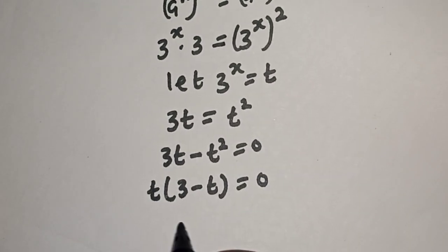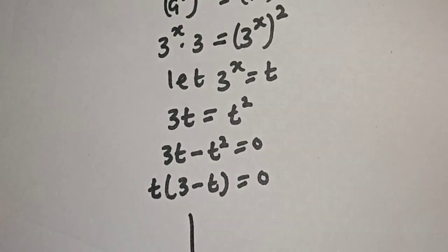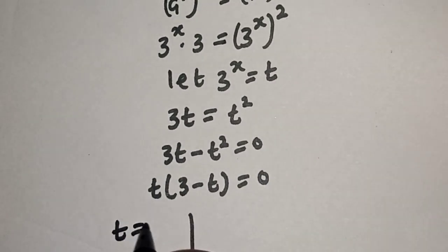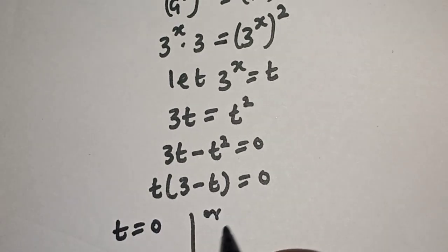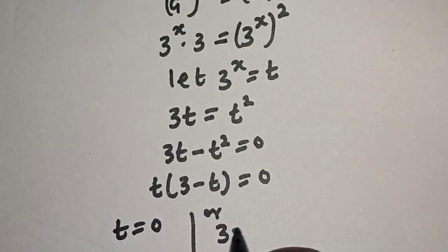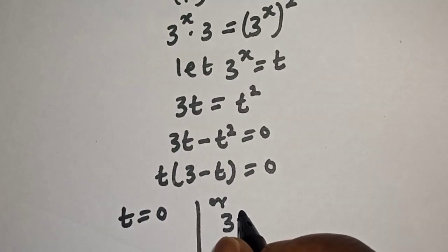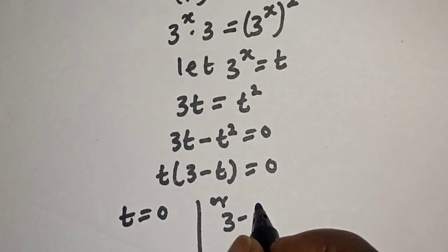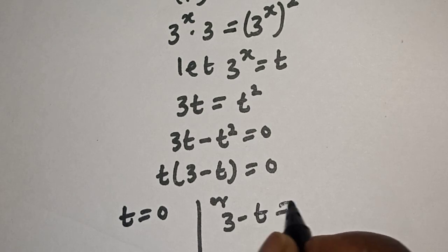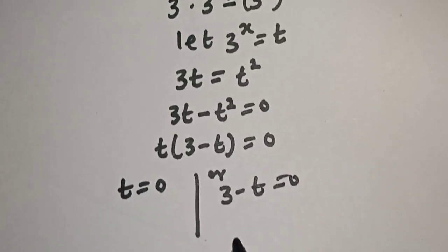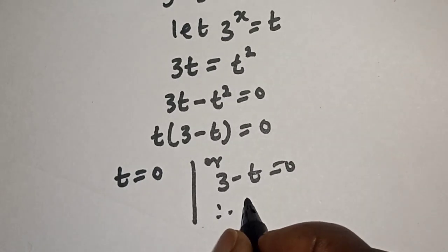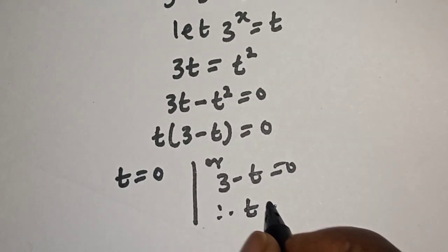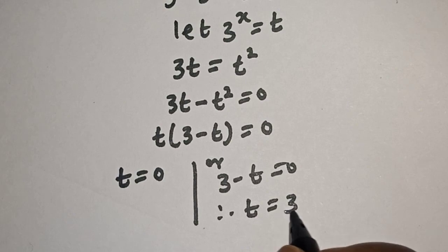Now t is common. We have t times bracket 3 minus t is equal to 0. There are two cases here. The first case is t is equal to 0, or 3 minus t is equal to 0, therefore t is equal to 3.